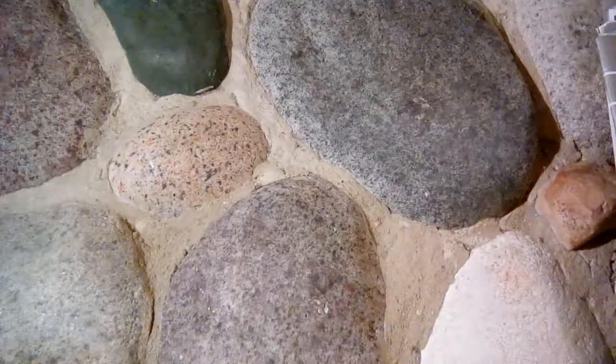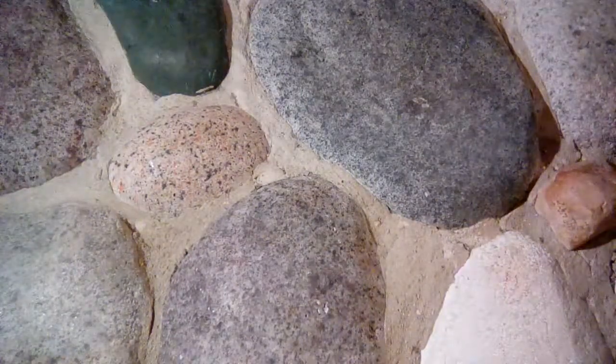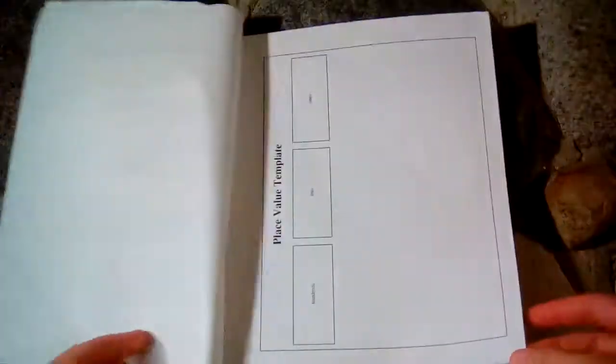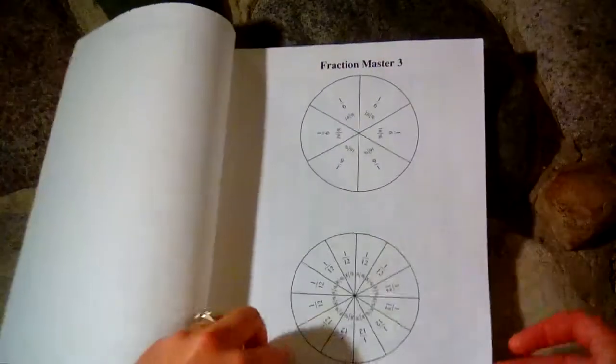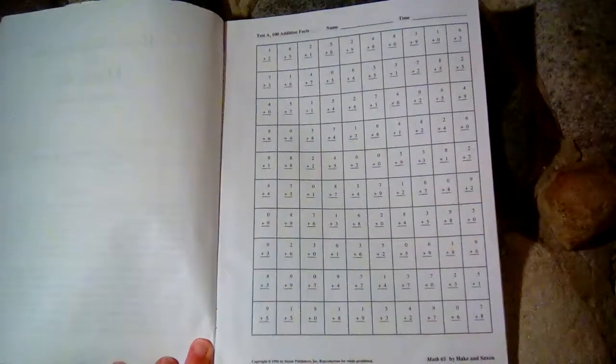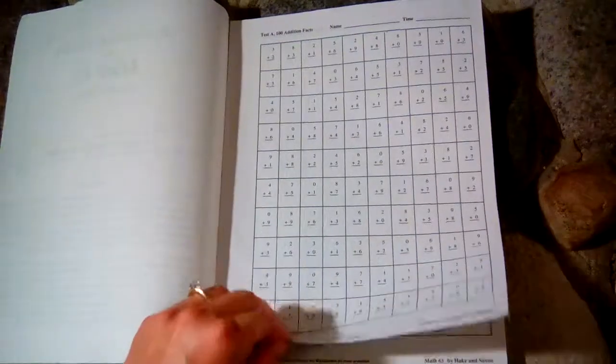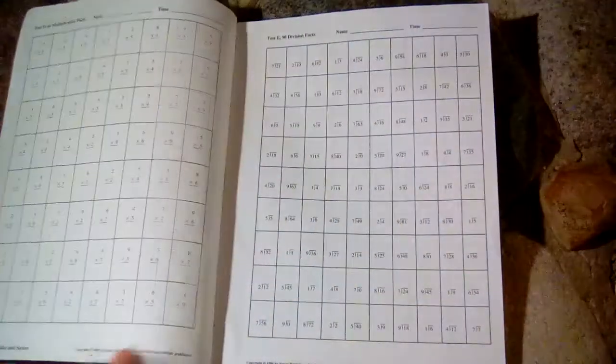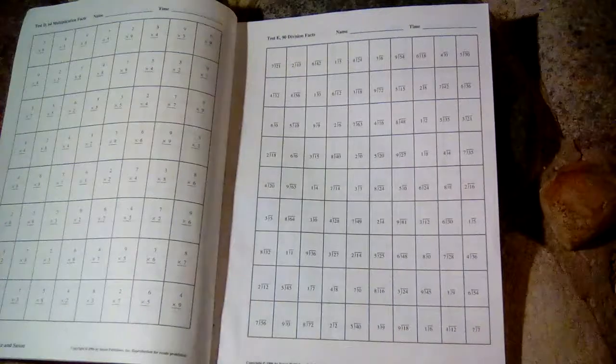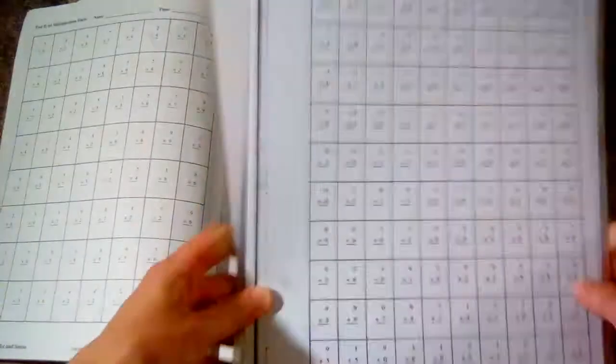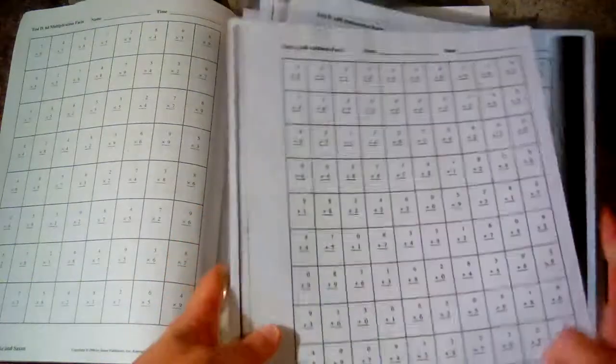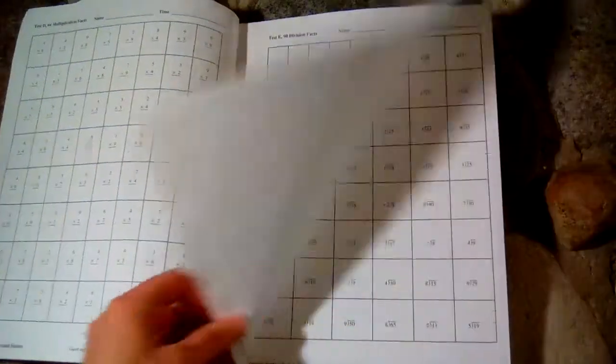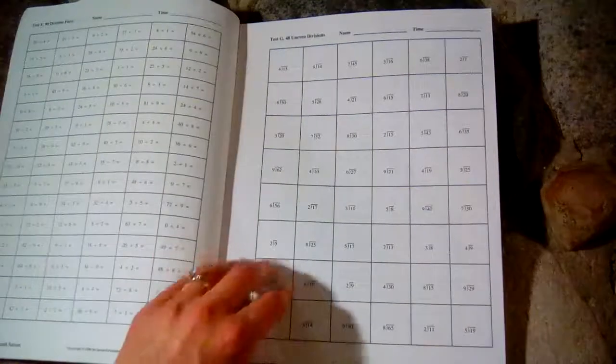For your fact practice, there are reproducible fact sheets that you can make copies of, and you would do these with every lesson, one fact sheet per lesson. What we did was I made a copy of this and we laminated it, and then my daughter did these with a dry erase marker. We were able to just wipe it clean and reuse them all school year. That's how we did that instead of making a whole bunch of copies.